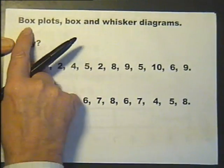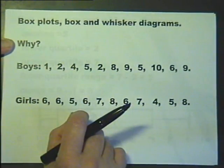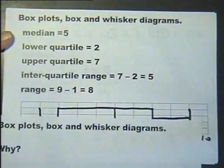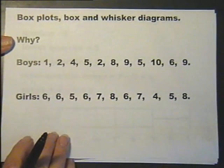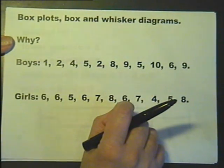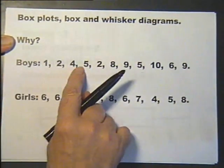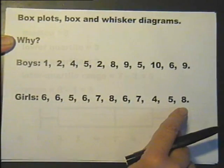So why do we do box plots or box and whisker diagrams? Well, they're a neat way to illustrate details. Don't you think that's real neat? A neat way to show details. And also very useful for comparing two sets of data used to compare distributions. So let's have a look at these boys' and girls' results.